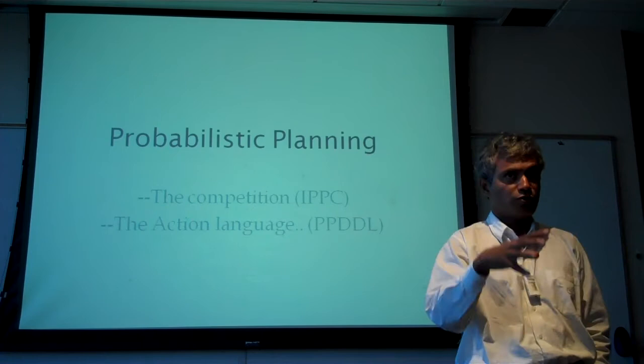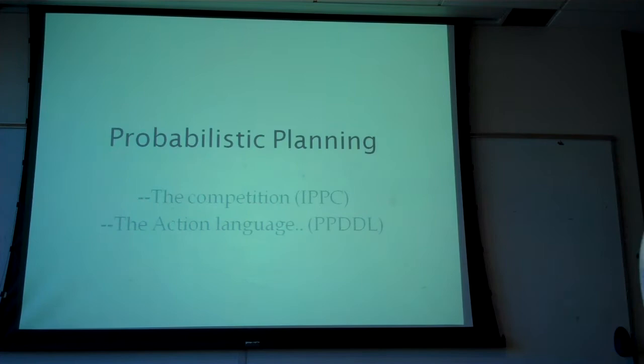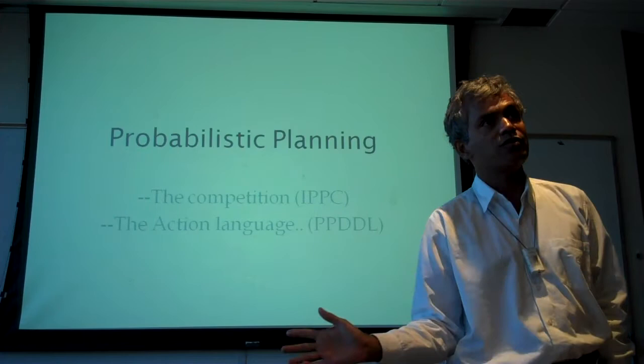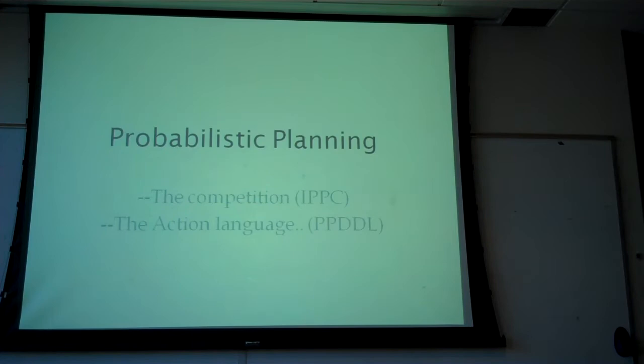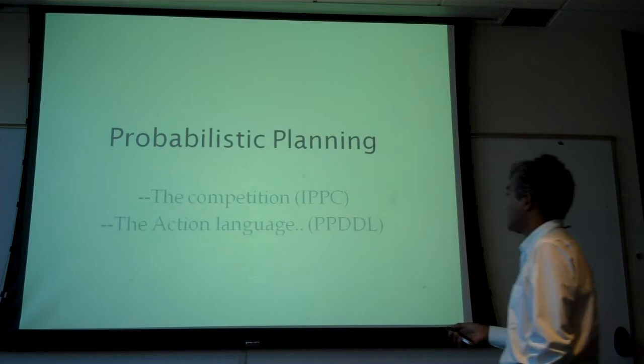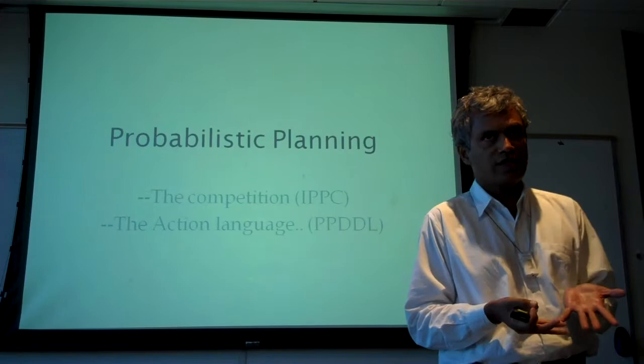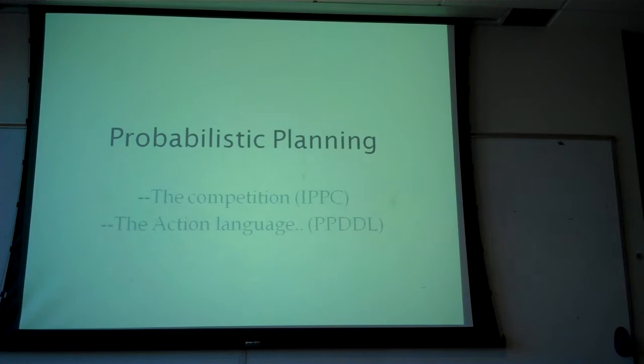Suppose you have blocks world, except blocks once in a while fall off, or a movement world where when you try to go in one direction, sometimes you go to a different place. You want to provide a representation for them — specifically, how to generalize the action language like PDDL using STRIPS representation so that you can represent stochastic planning problems.